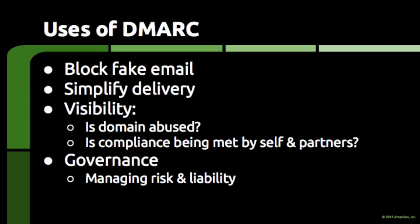To tie this all together, when a domain owner is confident that they've made all of their legitimate email easy to identify, they can tell the world to block the fake stuff. Today, DMARC is used to block a lot of fake email, which is a very good thing. However, even though blocking fake email is great, the visibility that DMARC provides to domain owners is useful in itself. People use DMARC to see if their domains are being abused on the internet. Organizations use DMARC to understand how they and their partners are sending email using their domains, and also if everyone is sending email correctly. Doing this turns DMARC into a compliance tool that organizations use to make sure they're doing everything they can to reduce the risk of fraud to themselves and to their customers, and also to make sure that any liability in terms of adhering to best practices to protect users and assets is reduced.